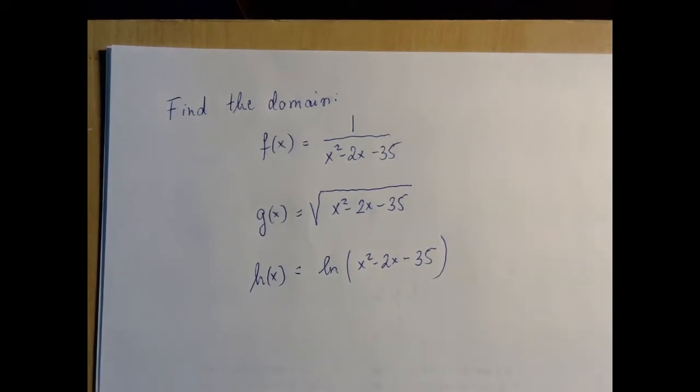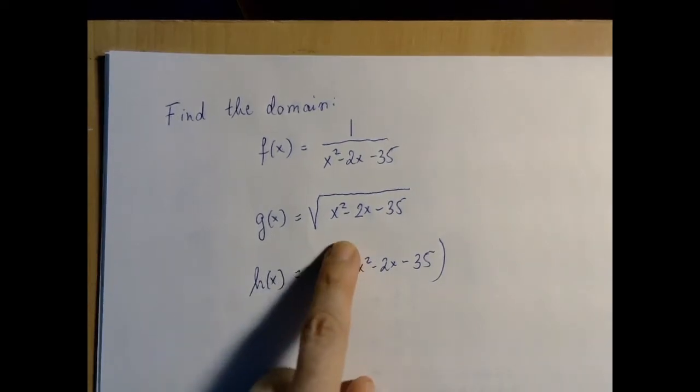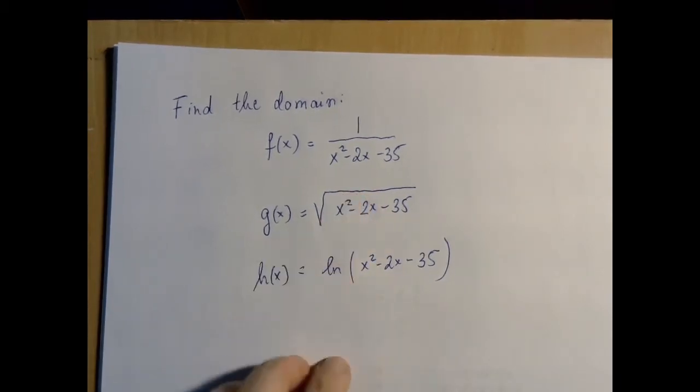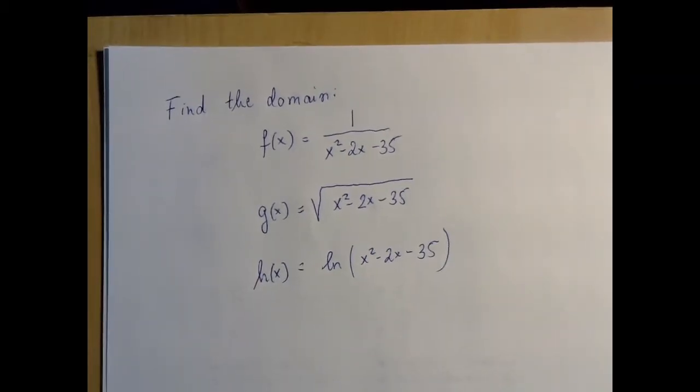Meaningfully substituted means we don't get undefined, we get a number. For example, if we put zero into this one, we are in trouble because we are going to take the square root of negative 35. That's undefined over the real numbers. So basically what we have to find is the natural domain of these functions.